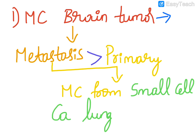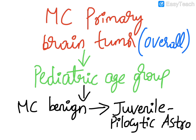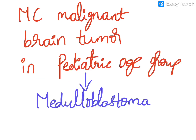The most common brain tumor overall is metastasis, with the primary source being small cell lung carcinoma. The most common benign primary brain tumor in the pediatric age group is juvenile pilocytic astrocytoma, and the most common malignant primary brain tumor in the pediatric age group is medulloblastoma.